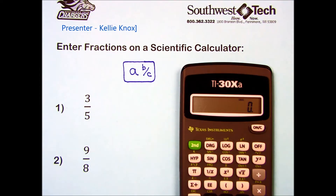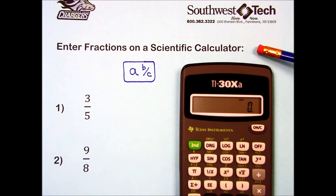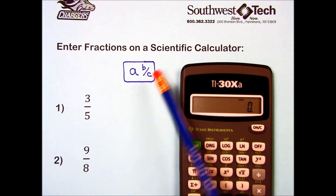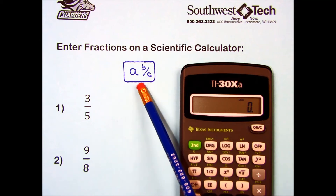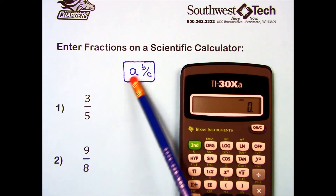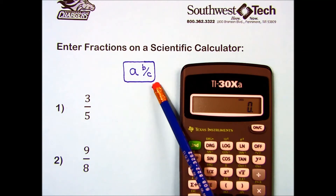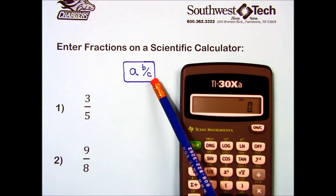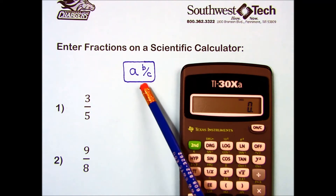Let's look at how to enter fractions on a scientific calculator. Most scientific calculators have a fraction key. It looks like this in a mixed number format — the letters a, b, and c represent spots where your digits would be.